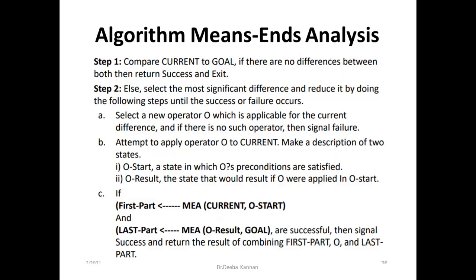We start from the current state. After applying O-start, this will result in O-result, which should reach the goal state. If there is a relationship between the current state and the goal state by applying that operator's precondition and postcondition, then it is in proper format and we repeat this process. This is how the means-end analysis algorithm is applied.